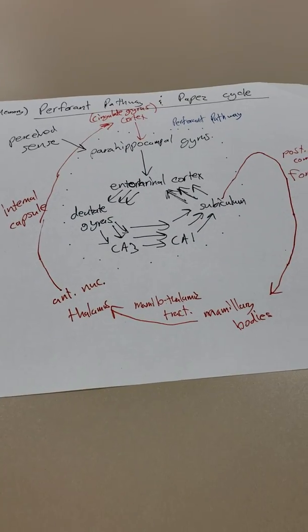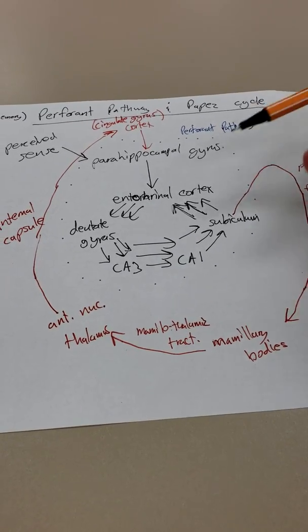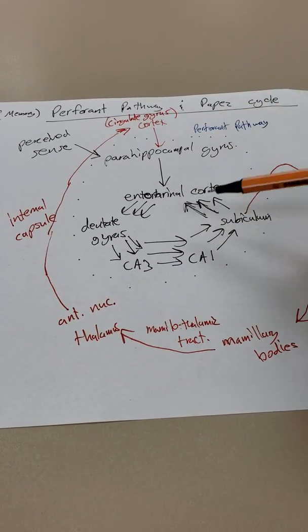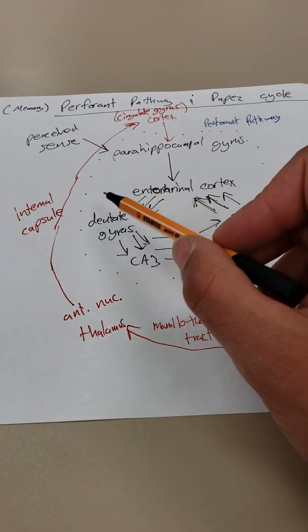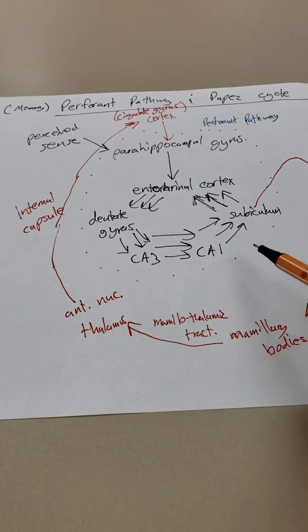So, the perforant pathway in the Papez cycle. The perforant pathway, just storing memory, all happens within the parahippocampal gyrus. Information, a sense first travels through the entorhinal cortex, dentate gyrus, CA3, 1, subiculum, and over and over until a memory is formed.